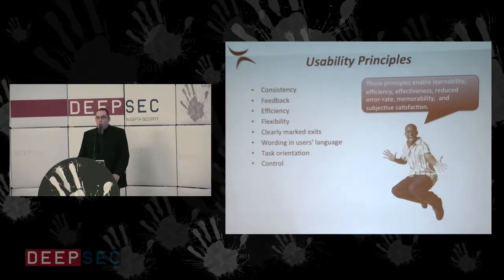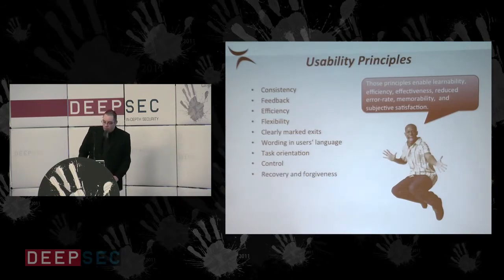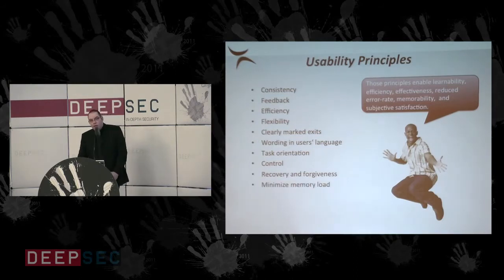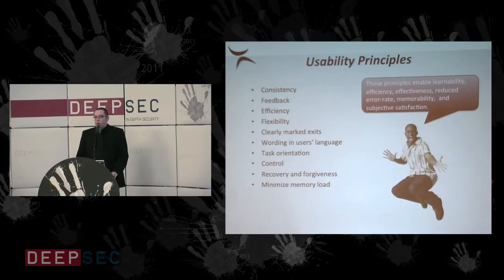Control means more the feeling of control — users need to feel in control when sitting in front of the machine. If it's the other way around, we have a big usability problem and people are likely to switch or not use the system at all. Recovery and forgiveness is the next principle: humans make errors, so good systems are built in a way that humans can recover from errors. Minimize memory load means don't rely on knowledge in the user's head too much — it's not about authentication knowledge like a PIN, it's about how things work. Don't rely on the user having read the 300-page manual.